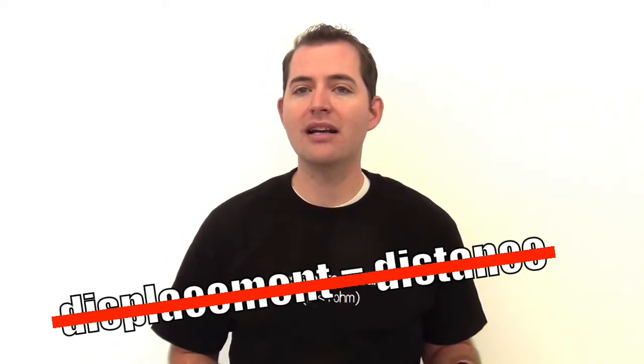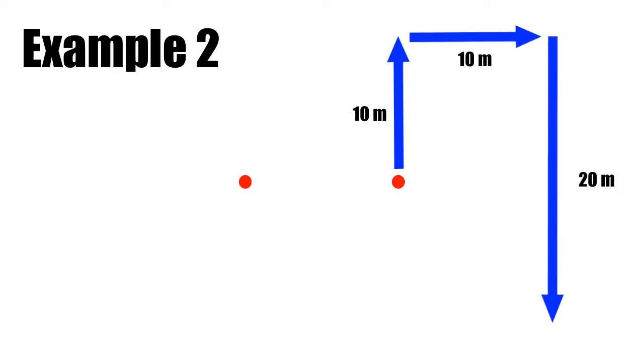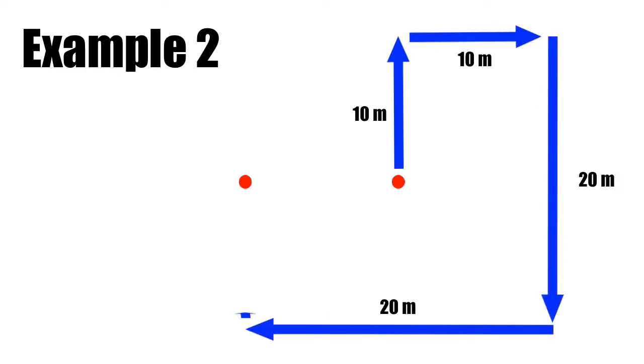Let's look at one more example that's a little more complicated. In example two, our object starts at point A and ends at point B, but the way that it gets there is very important. At first it moves north 10 meters, then east 10 meters, then south 20 meters, west 20 meters, and north 10 meters.